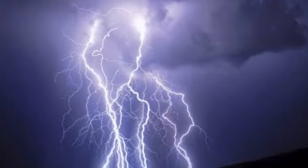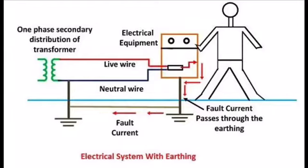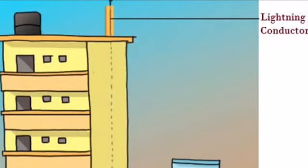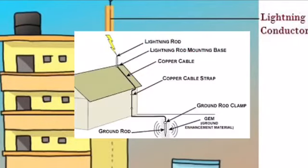This process is also called electrical discharge. The process of transfer of charges from a charged object to the earth is called earthing, grounding, or discharging. Every building is provided with earthing to protect it from electrical shocks due to leakage of electric current. The device used to protect a building from lightning is the lightning conductor. It consists of a metal rod with spikes at the top and a copper plate attached at the lower end, which is buried under the earth.